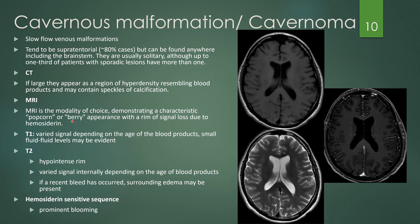Next, we have the cavernous malformation or cavernoma. These are slow-flow venous malformations that tend to be supratentorial but can be anywhere. On CT, they can appear as a small area of hyperdensity, so hemorrhage must be excluded. On MRI, it shows a popcorn or berry appearance with a rim of signal loss due to hemosiderin. To diagnose a cavernoma, look for T1 hyperintense signal centrally, T2 hyperintense signal centrally, and a hypointense T2 signal rim — all features must be present. There can be a little enhancement, surrounding edema if there has been recent hemorrhage, and it shows up very dark on hemosiderin-sensitive sequences.